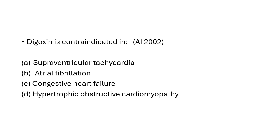The question is: Digoxin is contraindicated in — options are A. Supraventricular tachycardia, B. Atrial fibrillation, C. Congestive heart failure, D. Hypertrophic obstructive cardiomyopathy. The answer is hypertrophic obstructive cardiomyopathy, because non-selective beta blockers are the agents of choice for hypertrophic obstructive cardiomyopathy.